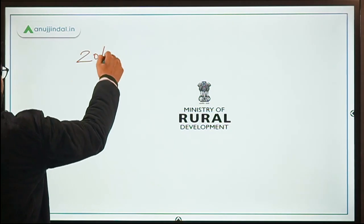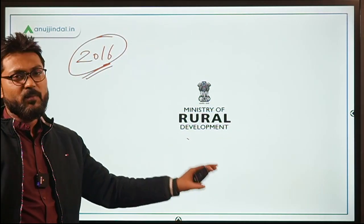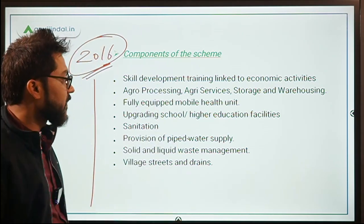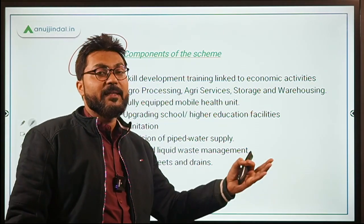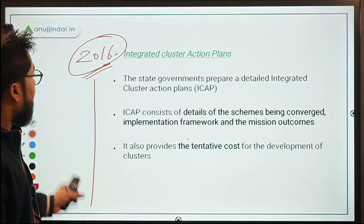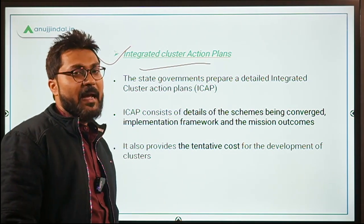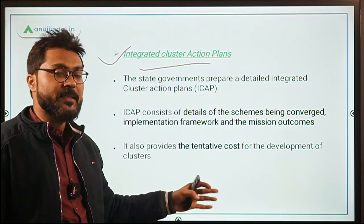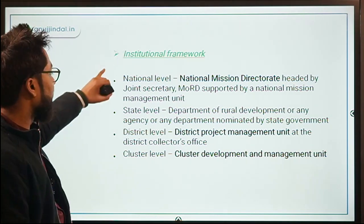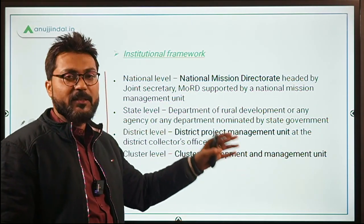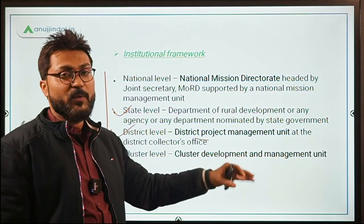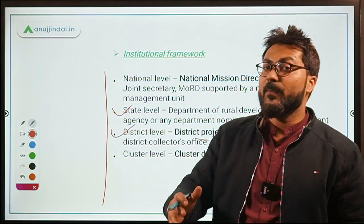The scheme is implemented by the Ministry of Rural Development. Development is carried out through the convergence of various centrally sponsored, central sector, and state government schemes. Integrated Cluster Action Plans are prepared by states and require approval from the central government. Institutional framework: National Mission Directorate headed by Joint Secretary at national level; state-nominated department at state level; District Project Management Unit at district level; Cluster Development and Management Unit at cluster level.